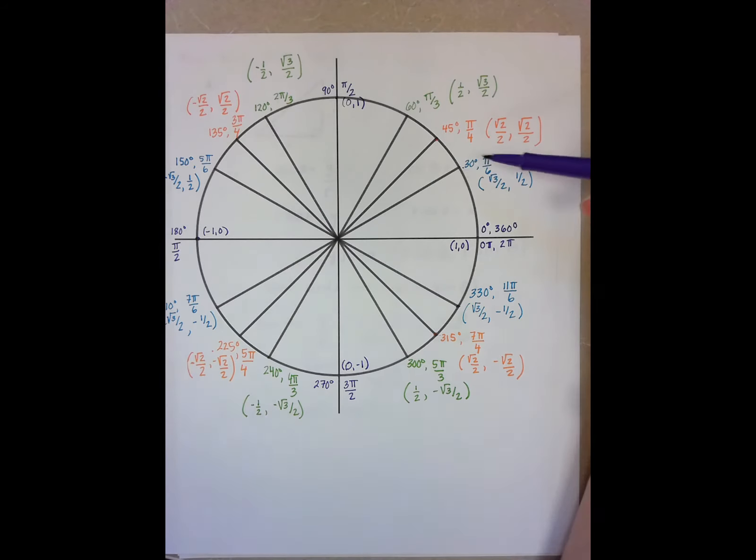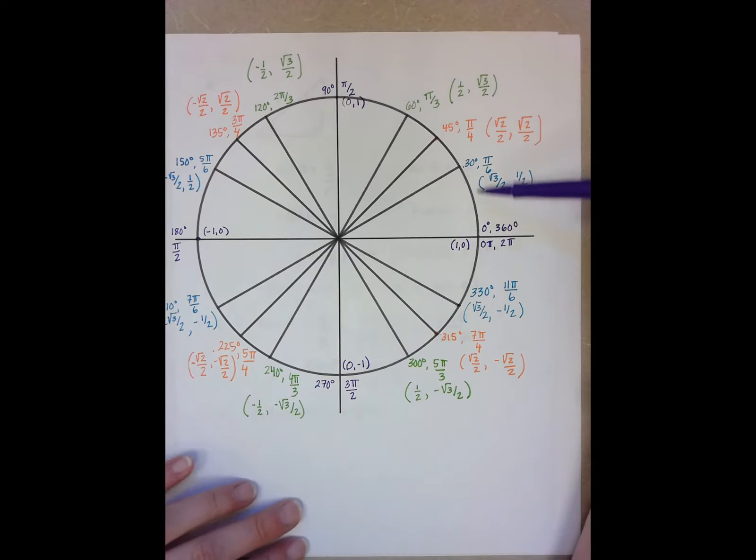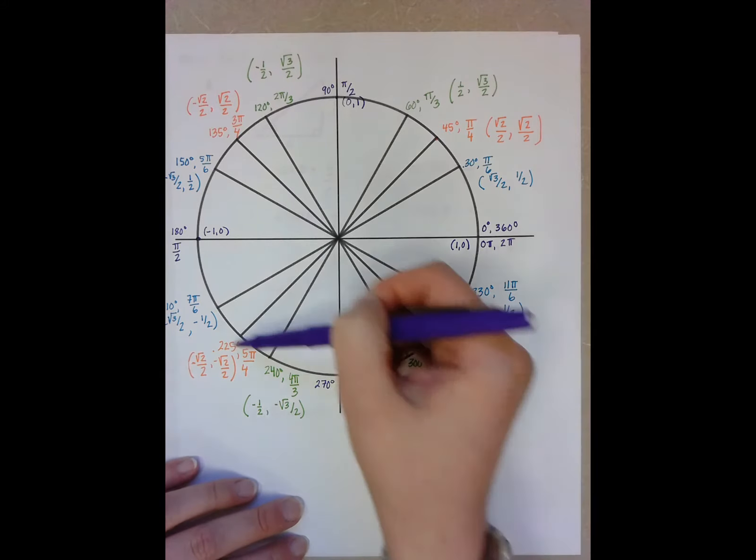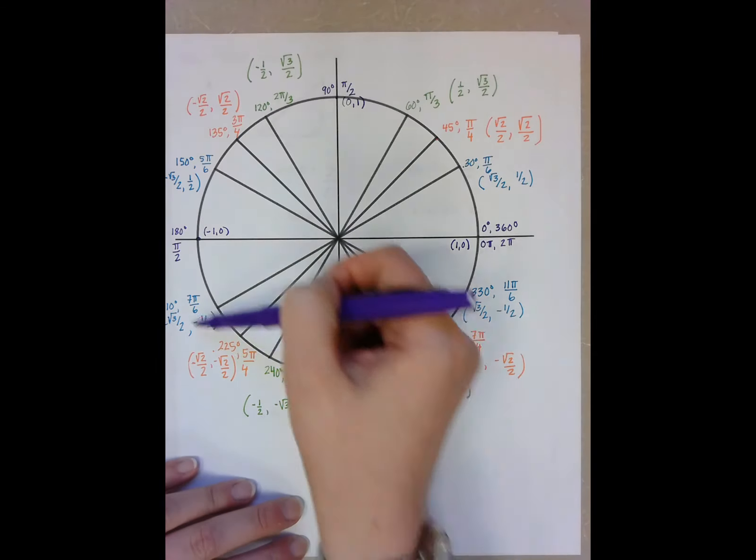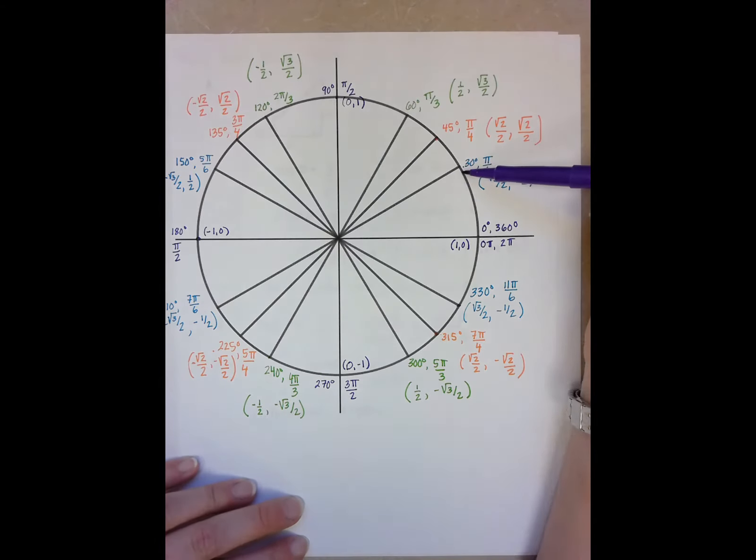330 degrees. I could land here by going 2 pi plus pi over 6. I could land here by going negative 2 pi, negative 11 pi over 6. So there are lots of ways.